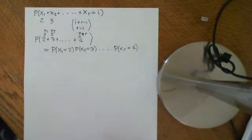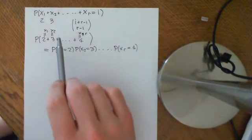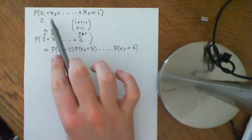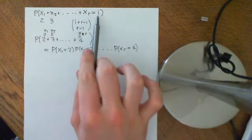Okay, so welcome to part 3 of this video on the negative binomial distribution. So what we've done is we've said, okay, we want the probability that x1 plus x2 all the way up to xr is equal to i.